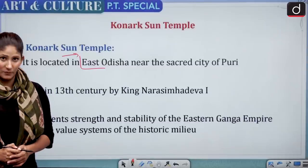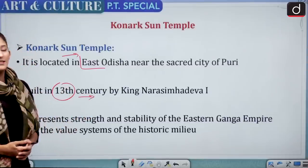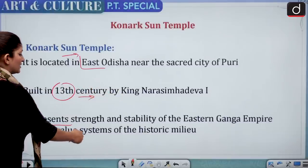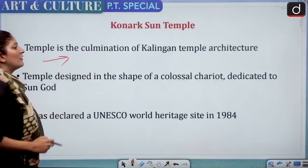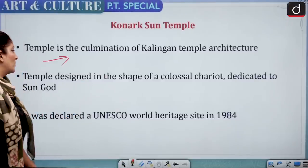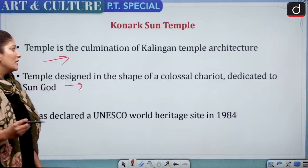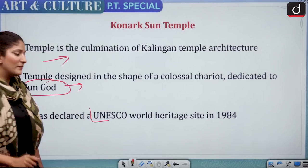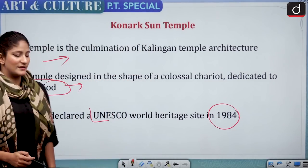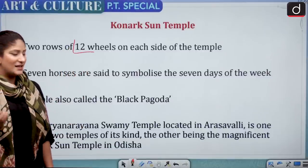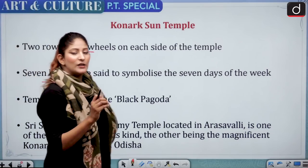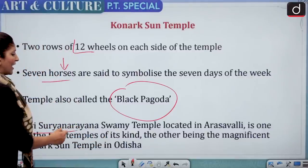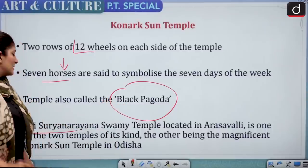Konark Sun Temple is in east Odisha, near the sacred city of Puri. It was built in the 13th century by King Narasimhadev I and represents the strength and stability of the Eastern Ganga Empire. It is the culmination of Kalinga temple architecture, designed in the shape of a colossal chariot dedicated to the Sun God. It was declared a UNESCO World Heritage Site in 1984. Two rows of 12 wheels on each side and seven horses symbolize the seven days of the week. The temple is also known as the Black Pagoda — while Jagannath Puri Temple is the White Pagoda.